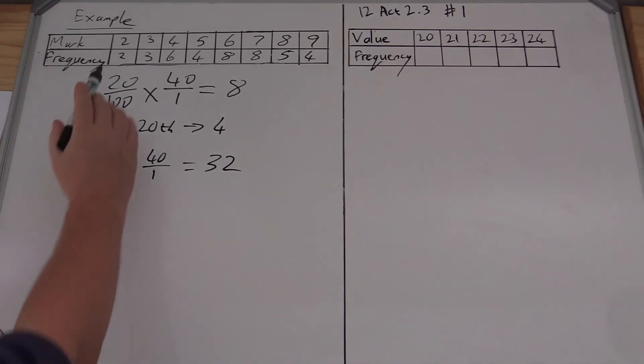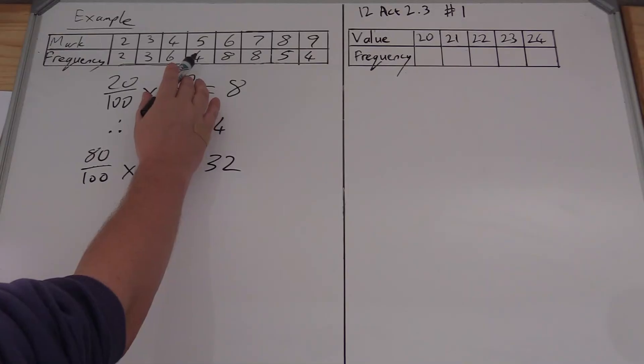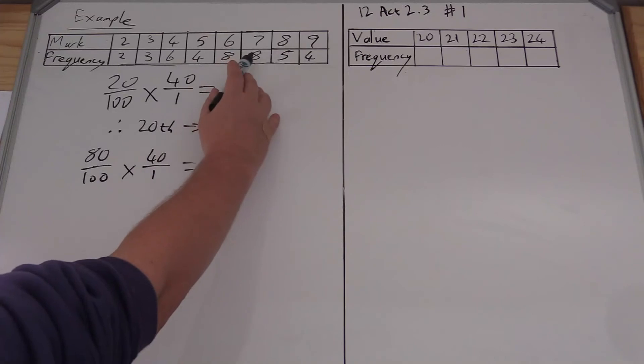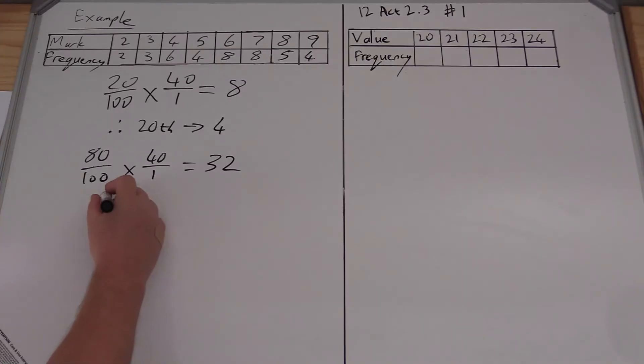That means that the 32nd position will be correct. So 2, 5, 11, 15, 23. Are you following? 23 takes me to 31. I'm looking for 32. So 32 must be the next one up, which is sitting at 8. Therefore, my 80th percentile is going to be an 8.